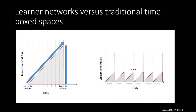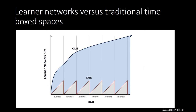The first of these diagrams shows the effect of recreating time-boxed courses on the learning network for an individual course, and the second shows the cumulative effect over several semesters. This diagram overlays the cumulative effect of a growing learner network — this might be for one course or for a programme.